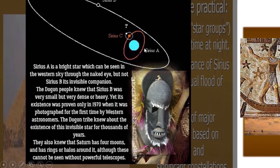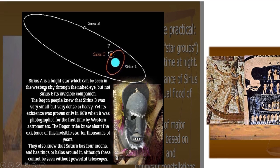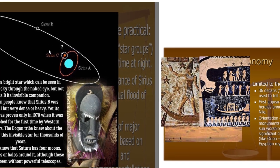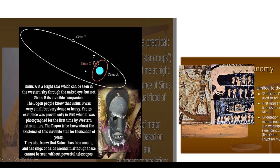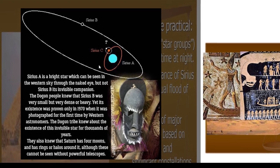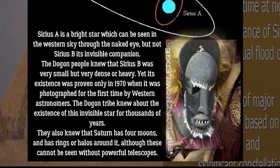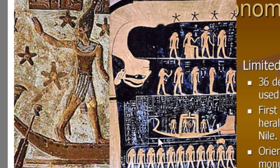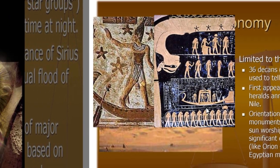When you go to astronomy, no one beats the Dogons. Sirius A is a bright star which can be seen in the western sky through the naked eye, but not Sirius B, its invisible partner which is very small and very dense and heavy. Yet its existence was proven only in 1970 when it was photographed for the first time by western astronomers. The Dogon tribe knew about the existence of this invisible star for thousands of years. They also knew that Saturn has four moons and has rings or halos around it, although these cannot be seen without powerful telescopes.